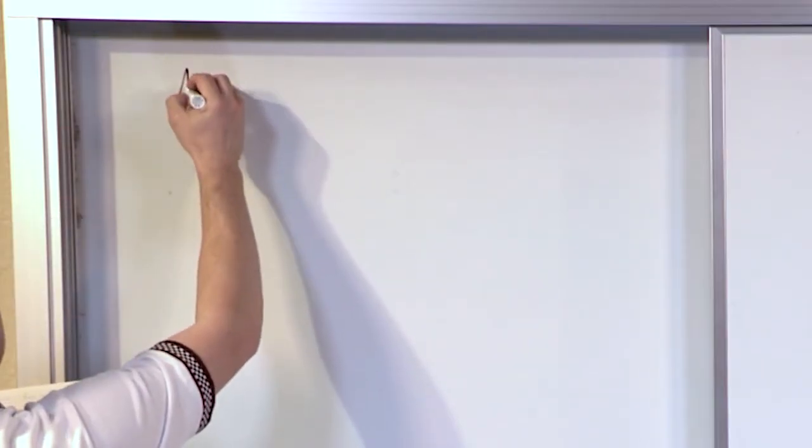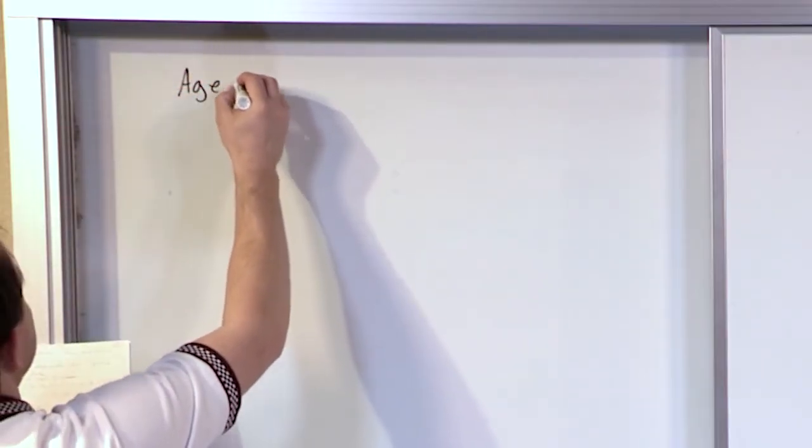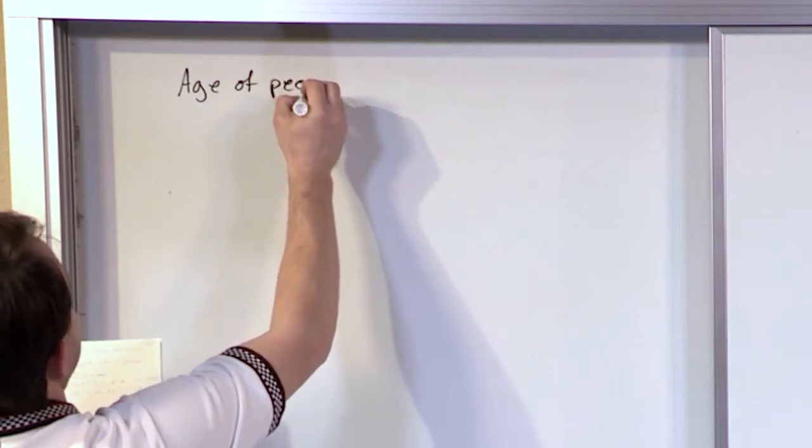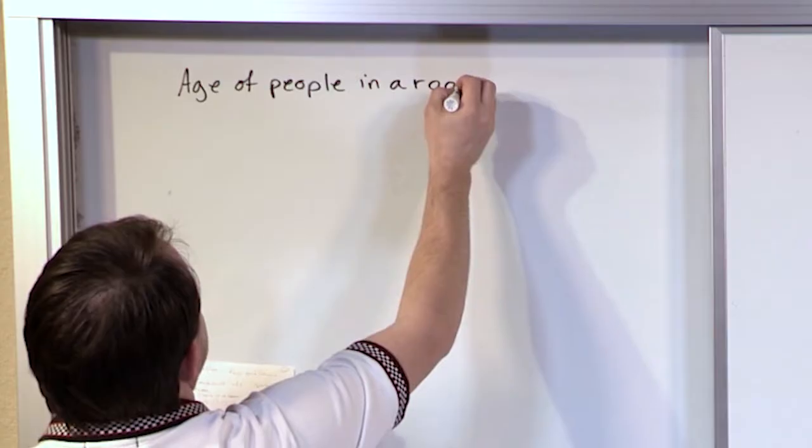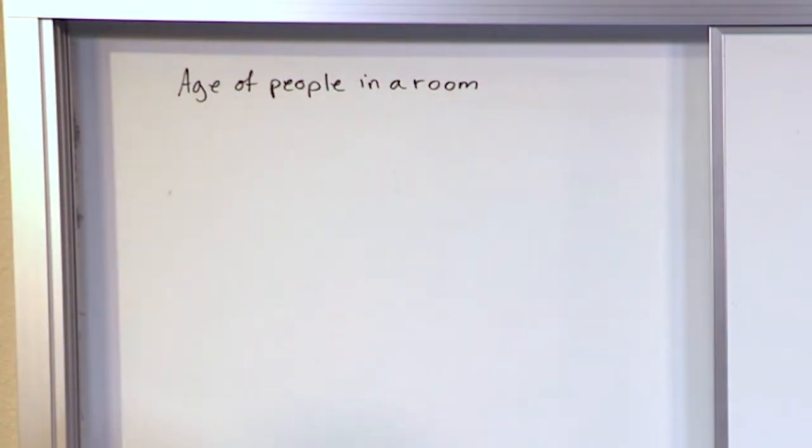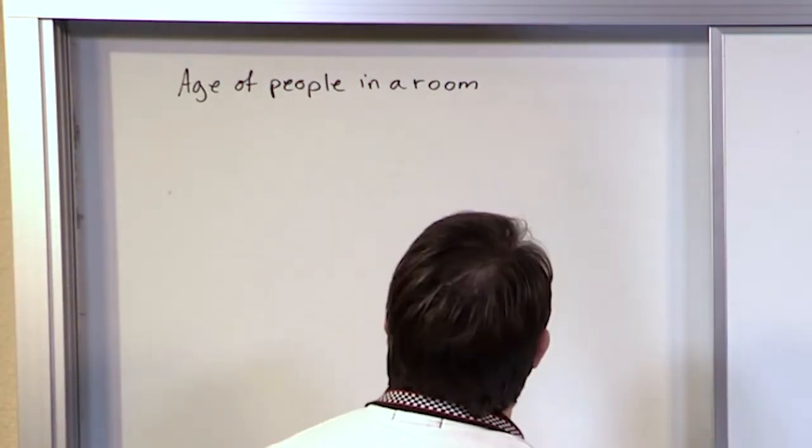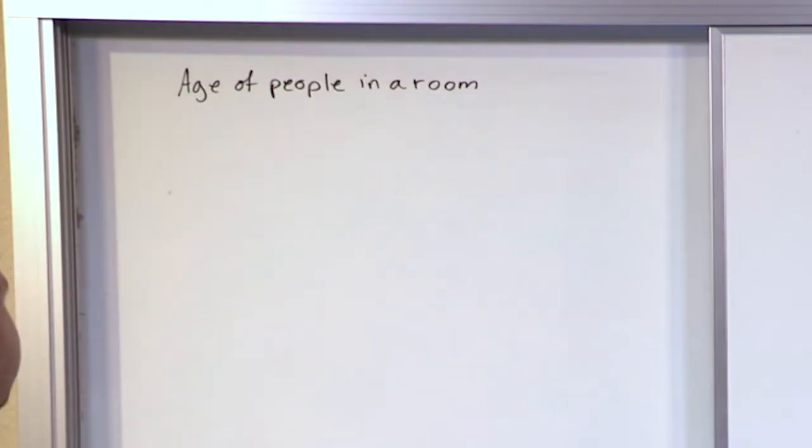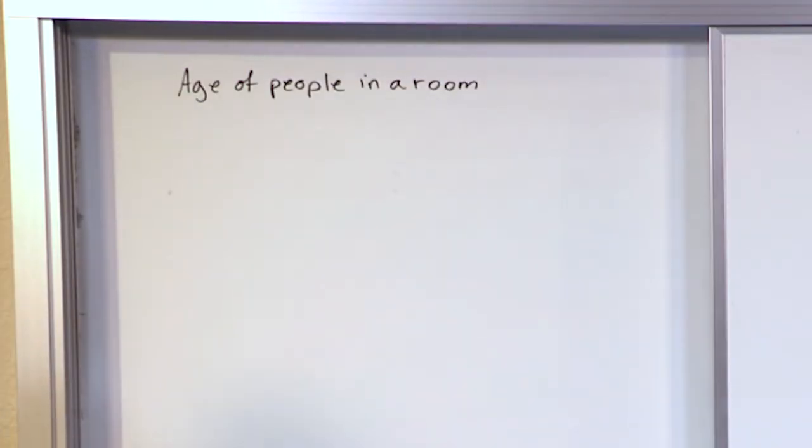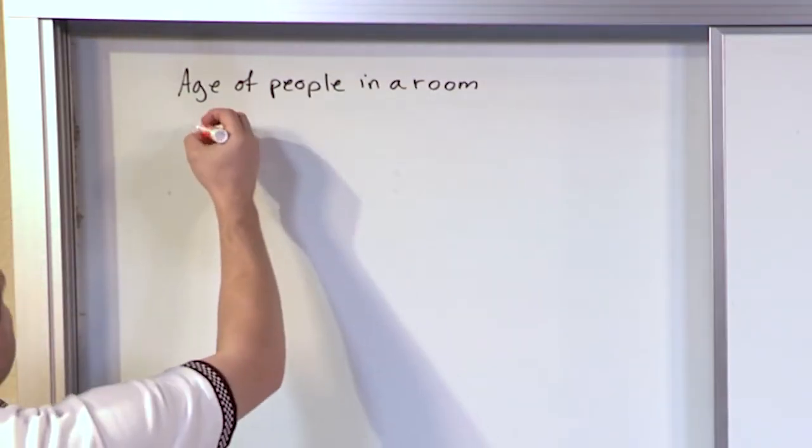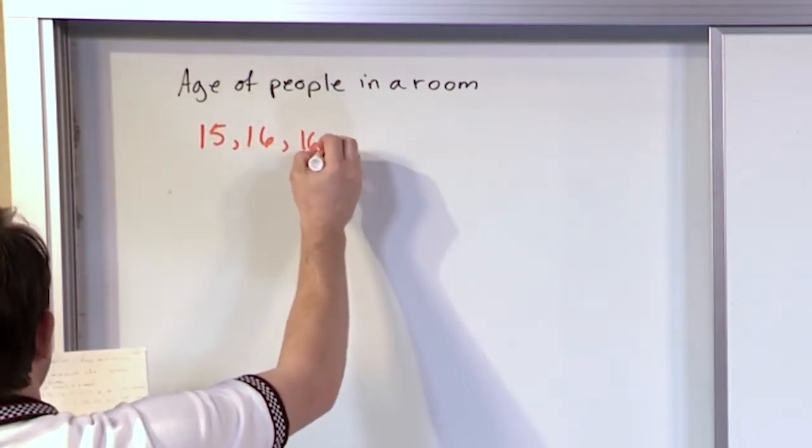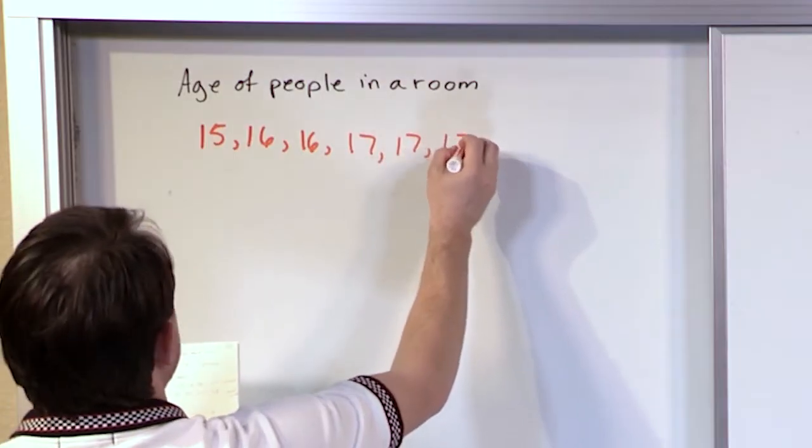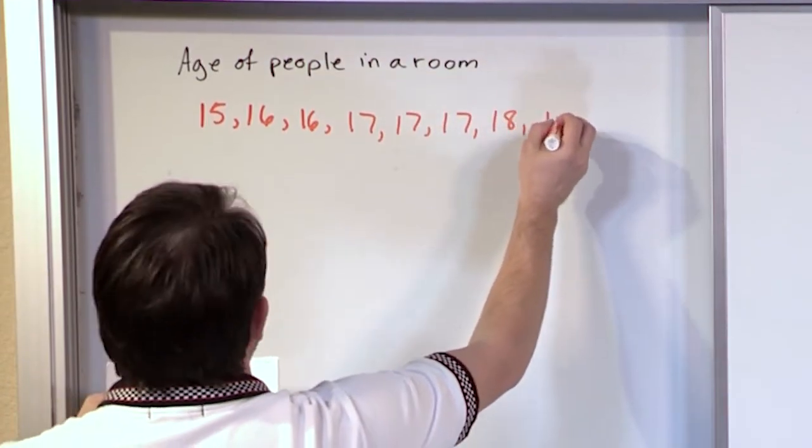Let's say we have a data set which is the age of people in a room. So we go to a party or something and we go and we ask everybody, how old are you? And we get the following data set: 15, 16, 16, 17, 17, 17, 18, 19.